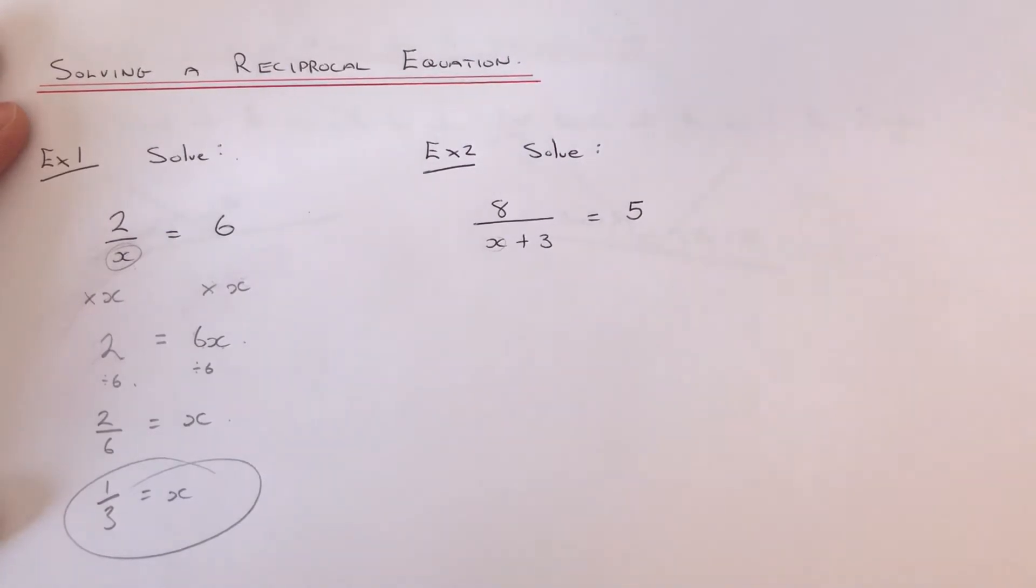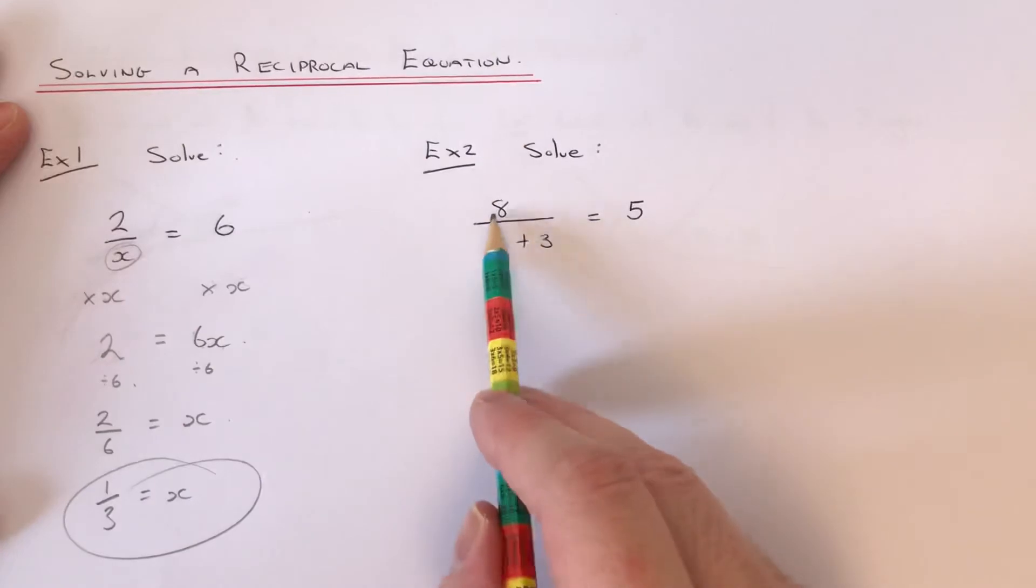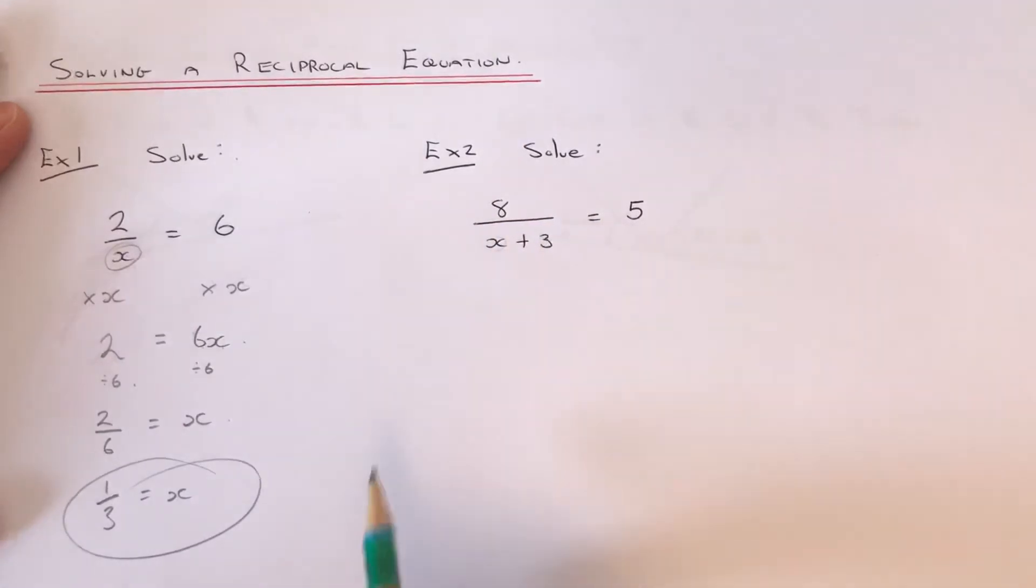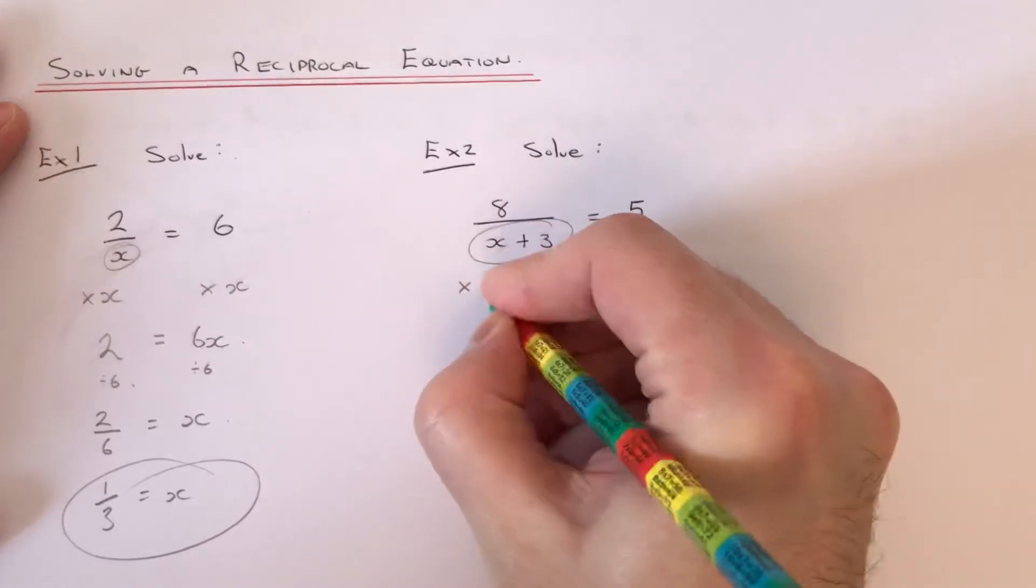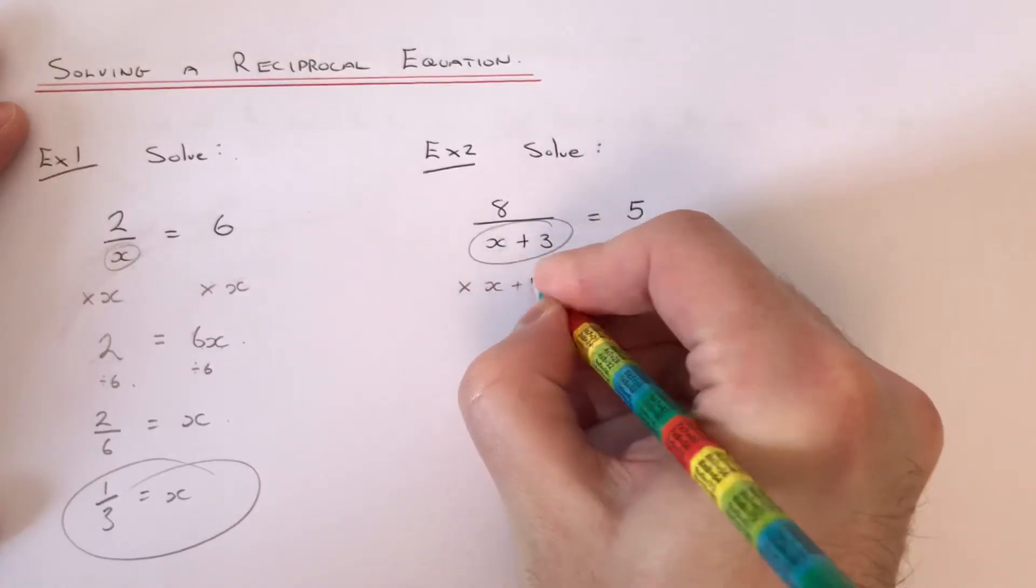So let's have a look at example 2 then. This time we've got to solve 8 over x plus 3 equals 5. So again, if we multiply both sides by our denominator, which is x plus 3.